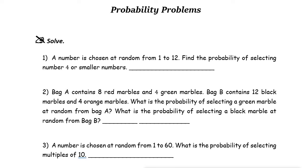Probability can be expressed as a fraction, decimal, or percent. The formula that we use for probability is: P (probability) equals the desired outcomes — let's just write D — over the total number of outcomes. So just a fraction.